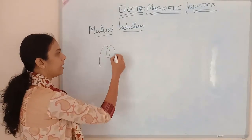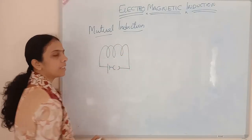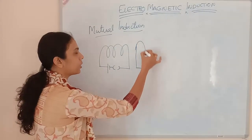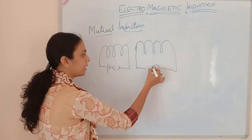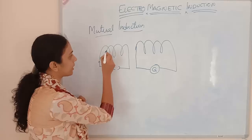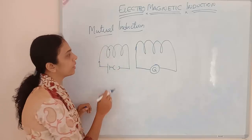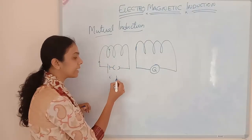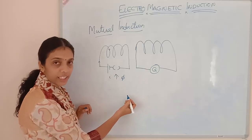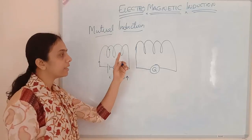Here I am considering a coil which is connected with a cell, and another coil which is connected with a galvanometer. Current is passing through the first coil when I switch it on. While the current is increasing, magnetic flux will also be changing, and this will cause an EMF in the other coil.